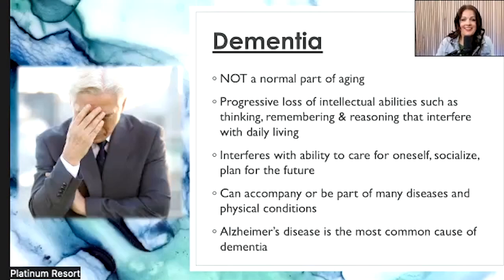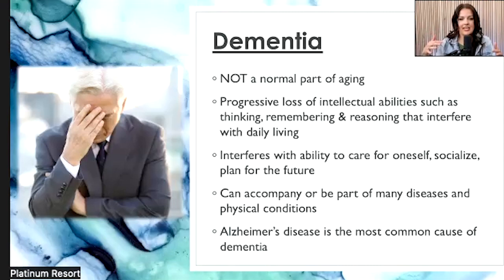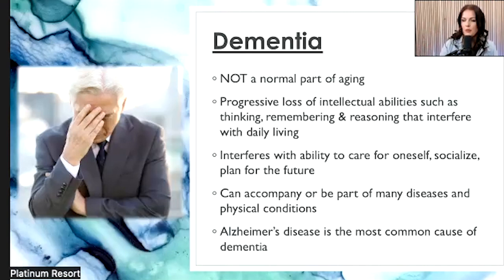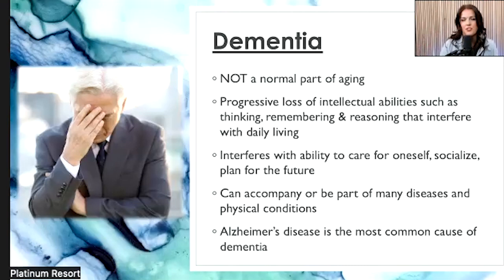So first of all, what is dementia? Dementia is an umbrella term. It's not a normal part of aging. That's something that is super important. I think people just think, oh, my mom's 90, she doesn't remember — it's just she's getting old. But dementia is not a normal part of aging.